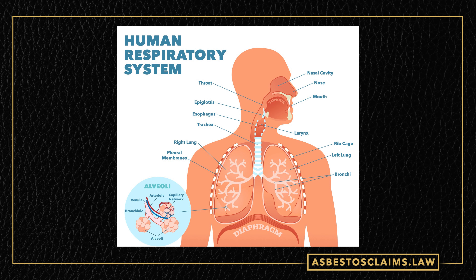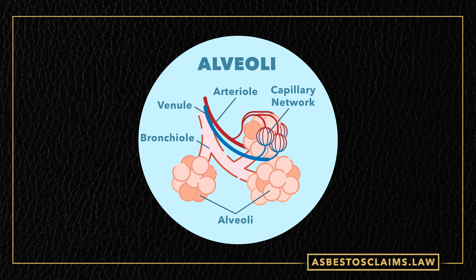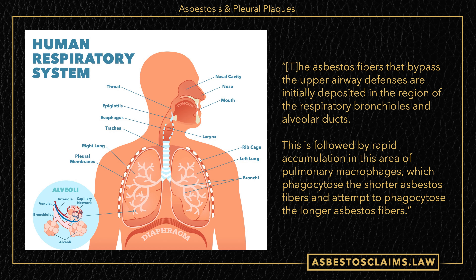This is where asbestos attacks. We'll zoom in a little further on those so you can kind of see. In each one of those, it looks like a little cluster. That's where asbestos fibers get lodged in and they start causing your health issues. The asbestos fibers that bypass the upper airway defenses are initially deposited in the region of the respiratory bronchioles and the alveolar ducts.